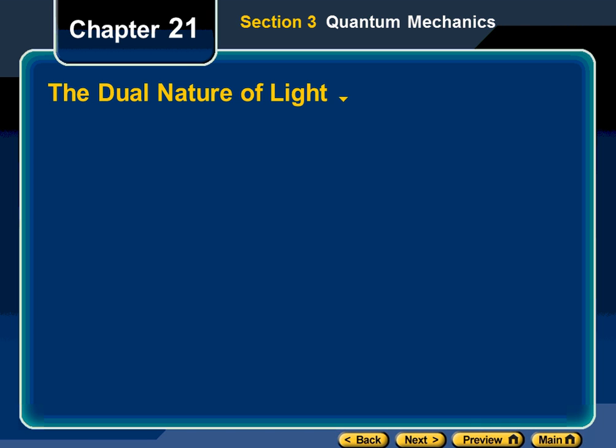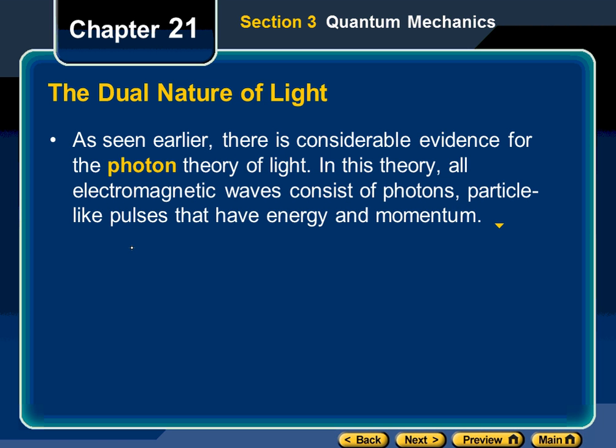Chapter 21, Section 3: Dual Nature of Light. We're already pretty familiar with this concept. Some of this will just be review. As seen earlier, there's considerable evidence for the photon theory of light.